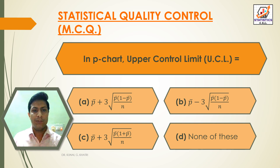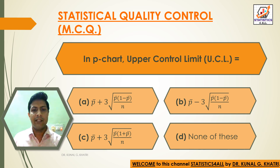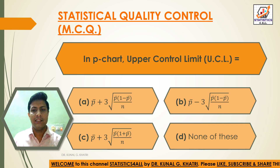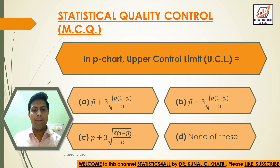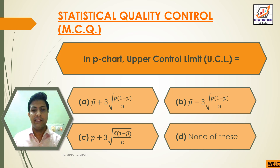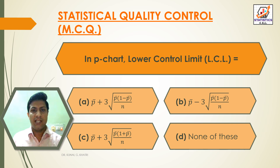Question 17: In NP chart, the upper control limit is equal to: Option A: P-bar + 3 × √(P-bar × (1 − P-bar) / n), Option B: P-bar − 3 × √(P-bar × (1 − P-bar) / n), Option C: P-bar + 3 × √(P-bar × (1 + P-bar) / n), Option D: None of these. Answer: Option A — UCL = P-bar + 3 × √(P-bar × (1 − P-bar) / n).